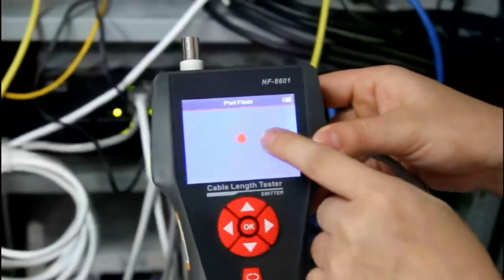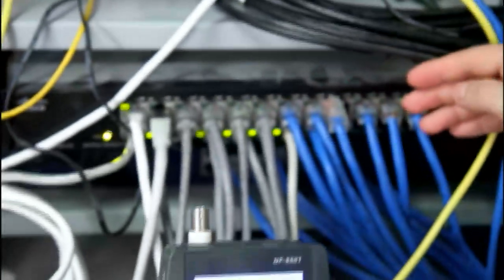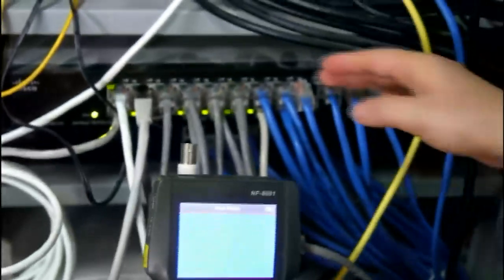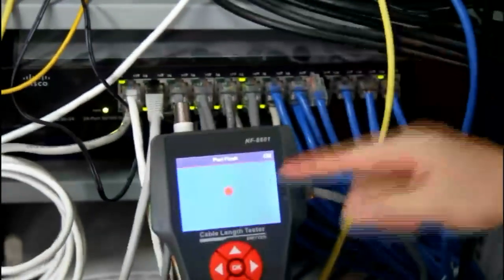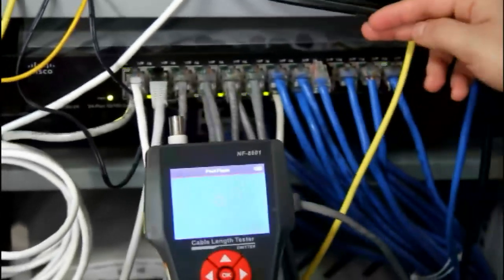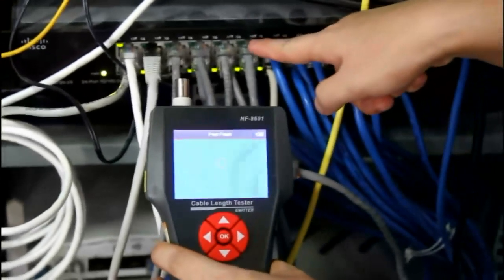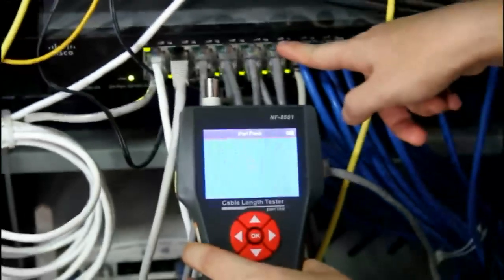You can see a red circle flashes frequently. Let's observe the LEDs from the switches. You will find one LED flashes different from the other LEDs, but the same as the red circle. Here we can confirm this port is the right port we are looking for.